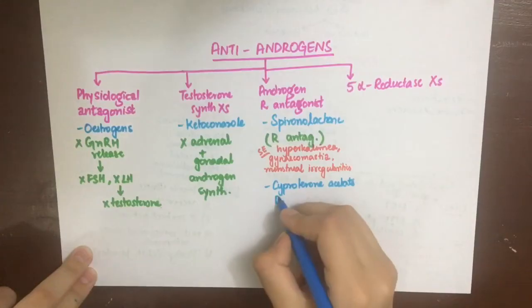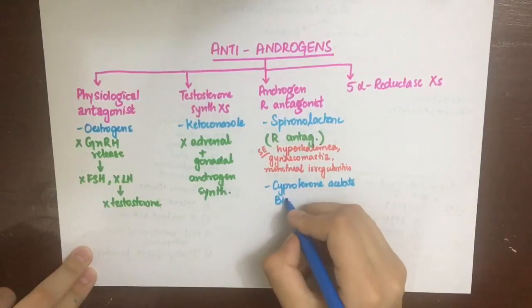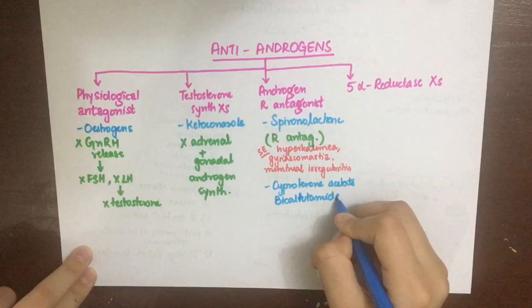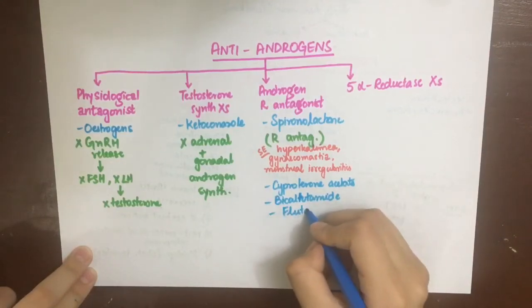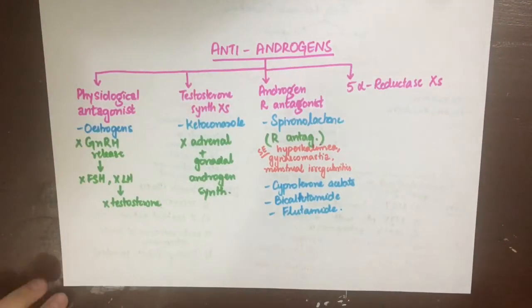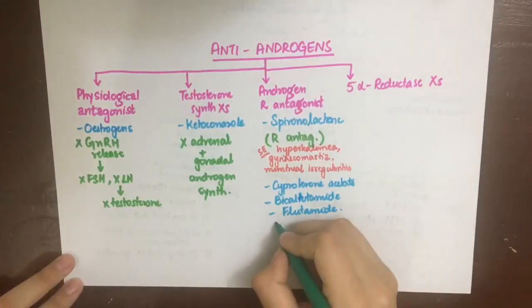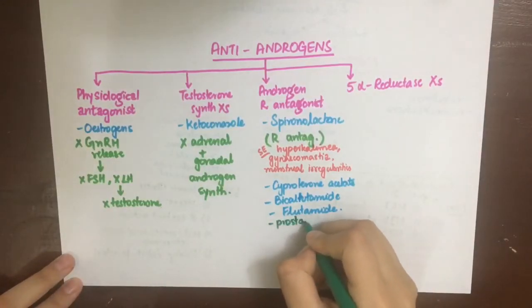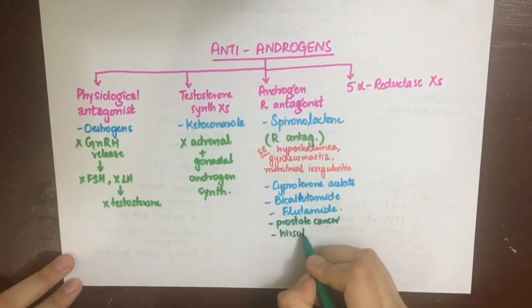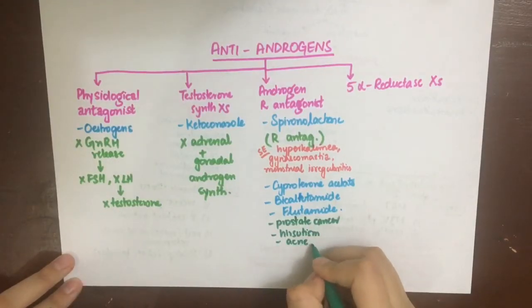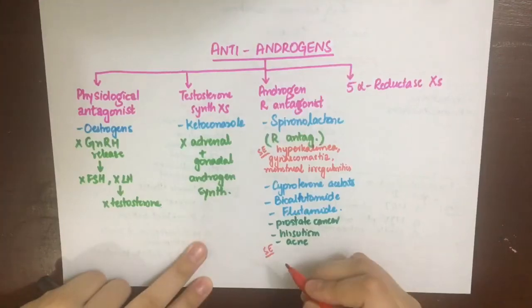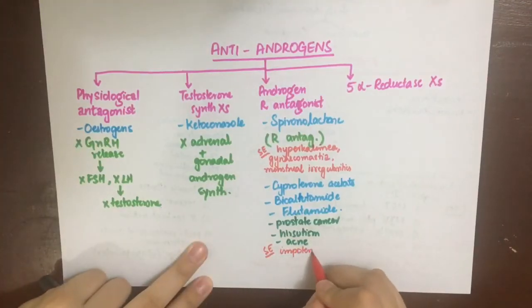Other androgen receptor antagonists include cyproterone acetate, bicalutamide, and flutamide. These are used in prostate carcinoma because these cancers can have androgenic receptors, and also in hirsutism and acne in both males and females. Adverse effects can include impotence, hot flushes, gynecomastia, liver damage, decreased spermatogenesis, and GI side effects like nausea, vomiting, and diarrhea.